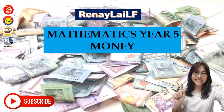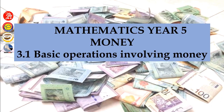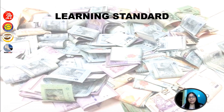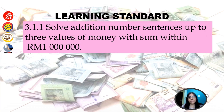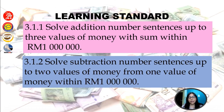Hi boys and girls, we meet again. Today we're going to learn mathematics year five on the topic money — basic operations involving money for year five. Now let's look at learning standard 3.1.1: solve addition number sentences up to three values of money with sum within one million. We are also going to look at 3.1.2: solve subtraction number sentences up to two values of money from one value of money within one million ringgit.